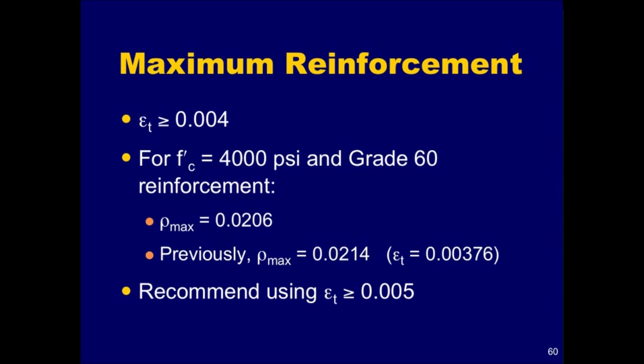In cases where member size is limited and extra strength is needed, it is usually best to use compression reinforcement to limit the net tensile strain so that the section is tension-controlled.